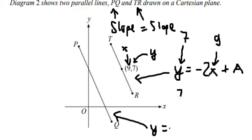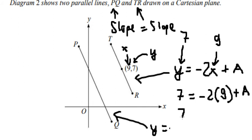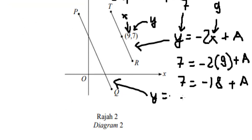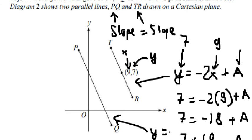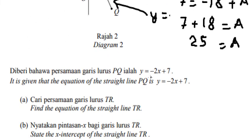We put 7 in for y, giving us 7 equals negative 18 plus a. We move negative 18 to the left, so we get 7 plus 18 equals a, which gives us a equals 25. So we can write the equation of line TR.